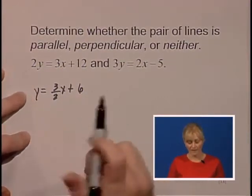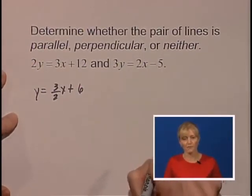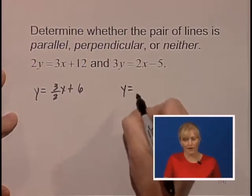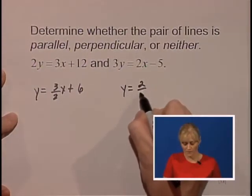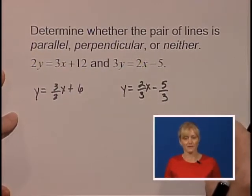We have this now in the slope-intercept form, so we'll move along to equation 2. We'll divide both sides of this equation by 3. y equals 2 thirds x minus 5 thirds.